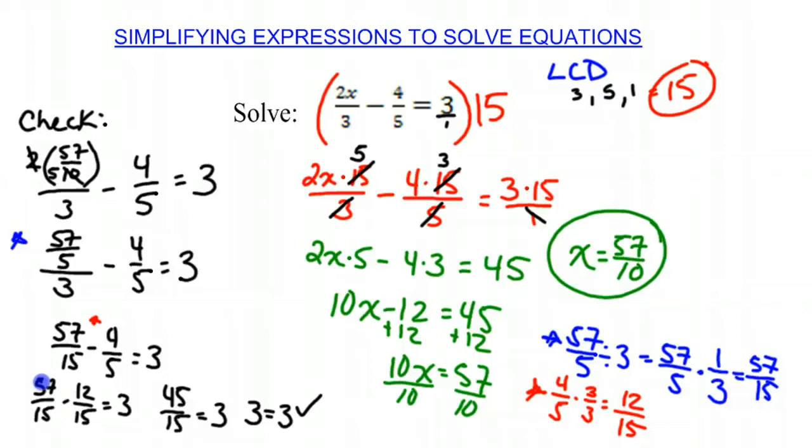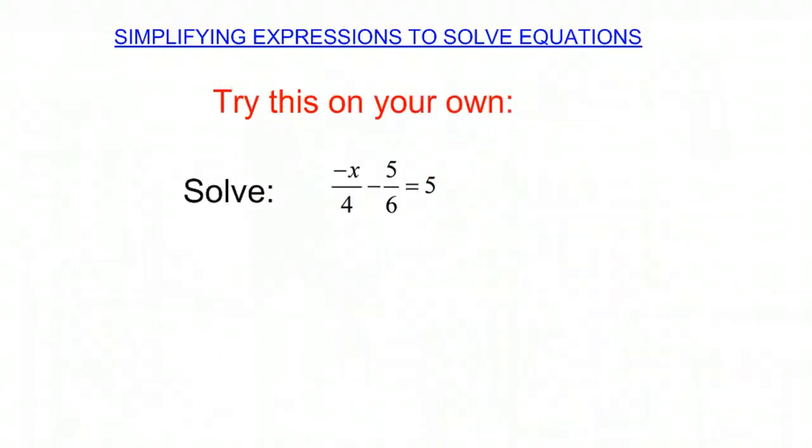So therefore, we know that our answer, x equals 57 over 10, works and is correct. So what I'd like you to do is I'd like you to try this one on your own. Negative x over 4 minus 5 over 6 equals 5. So remember that you have to find the lowest common denominator and then multiply it through. Solve for your x. Once you do that, you want to put it back into the equation to check your answer. Thanks very much for listening and good luck.